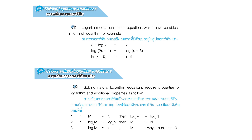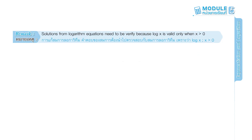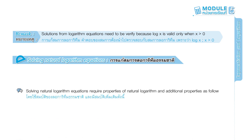Property 2: if log m base a equals log n base a, then m equals n. Property 3: if log m base a equals x, then m must always be greater than 0. Page 149. Remark: solutions from logarithm equations need to be verified because log x is valid only when x is greater than 0.